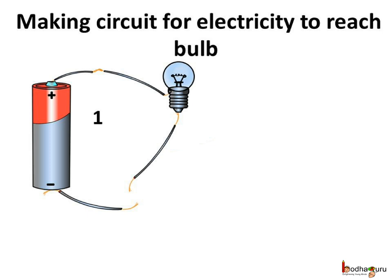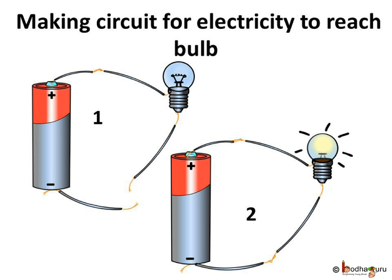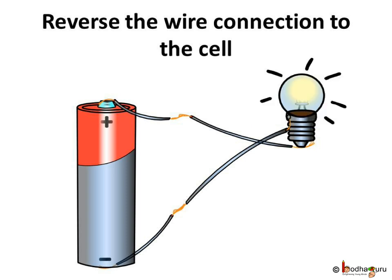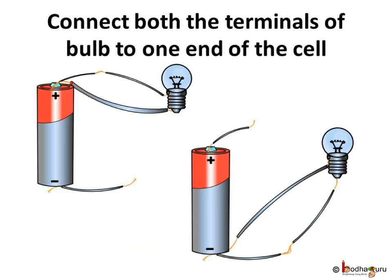Look! The bulb is glowing! That means the circuit is complete. What if we reverse the connection from the bulb to the cell? That is, the terminal which was connected to the negative terminal of the cell is now connected to the positive terminal of the cell, and vice versa. Well, the bulb still glows. That shows the bulb doesn't have a positive or negative terminal like a cell. We started making the path from positive and ended at the negative end of the cell — not the same end of the cell.